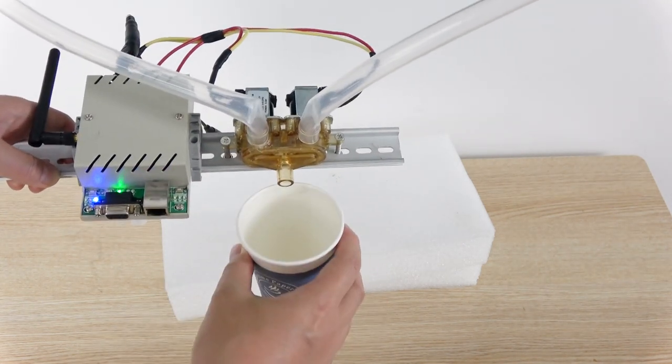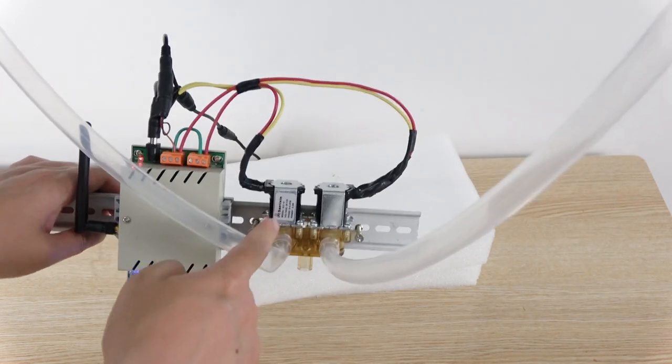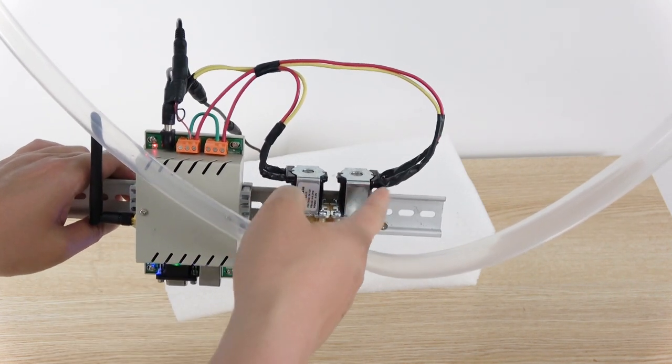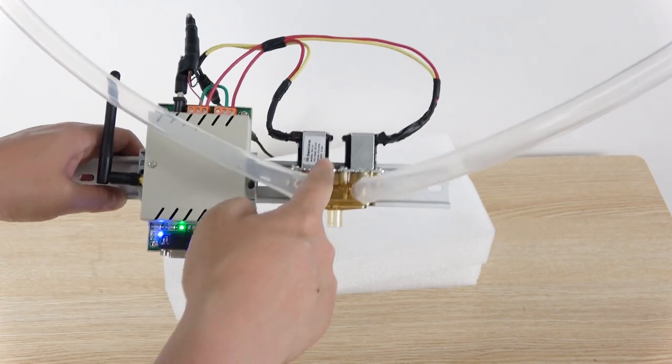I have a cup. It will output at this valve. So this is the valve controlled by this relay, and this is the valve controlled by this relay. So we have two channel relays controlling the valves.